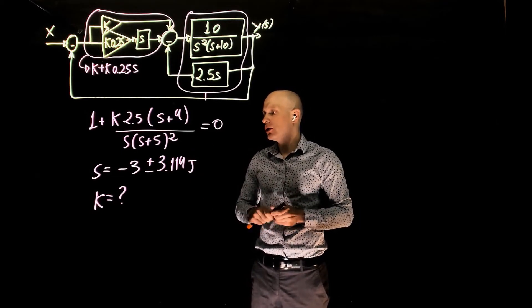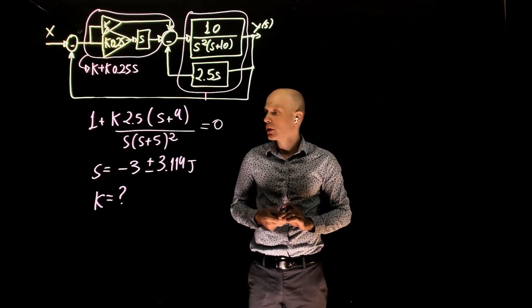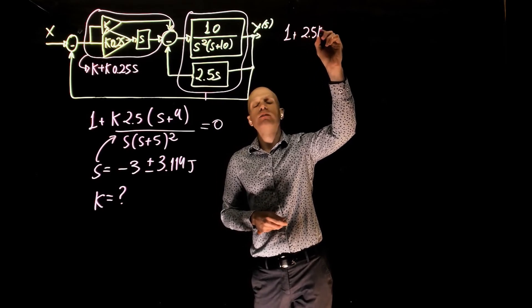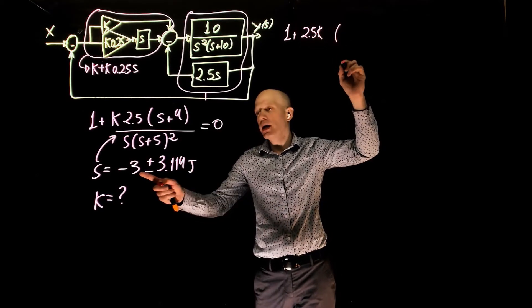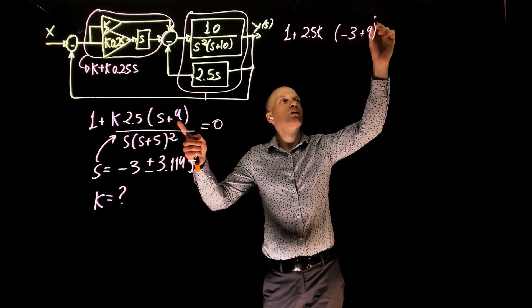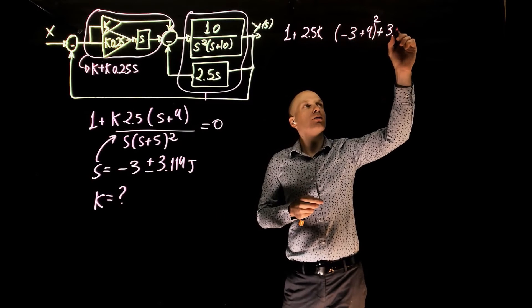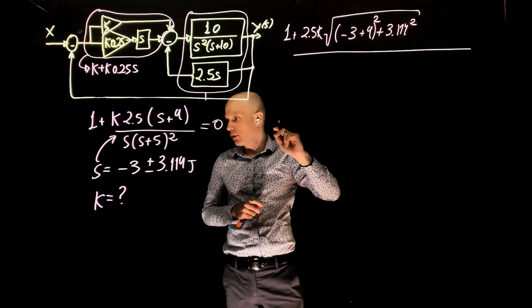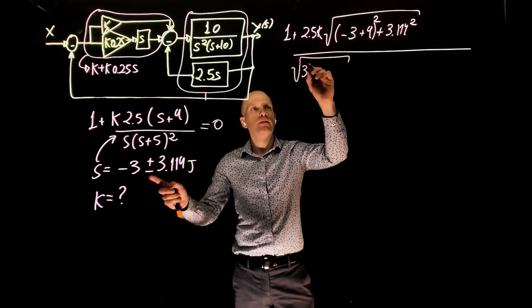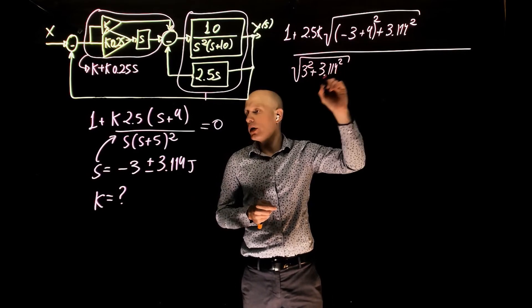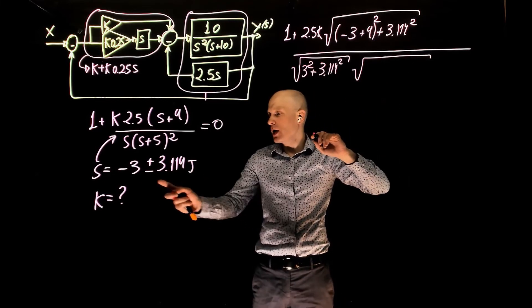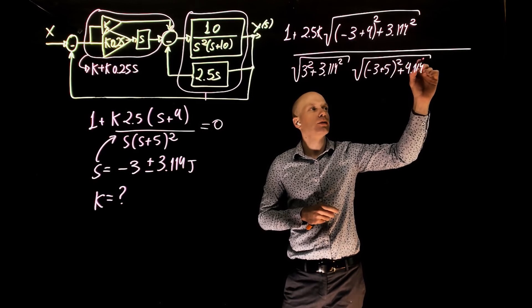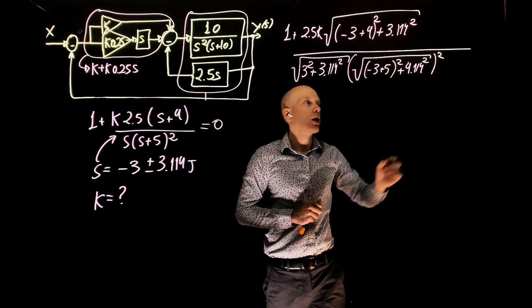We can now find the magnitude of this transfer function when s equals negative 3 plus minus 3.114j. To do that, I'll now replace s here and calculate the magnitude. This gives 1 plus 2.5k. Now replacing s here gives a real part of negative 3 plus 4 squared and an imaginary part of 3.114 squared. And the square root of that now is the magnitude. And this is all divided by, except 1 of course, s now becomes 3 squared plus 3.114 squared. And we have s plus 5, so replacing s here we have negative 3 plus 5, this is the real part, and the imaginary part is 4.114 squared, and is squared because this is squared here. And this is now equal to zero.